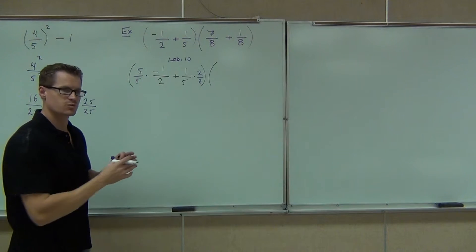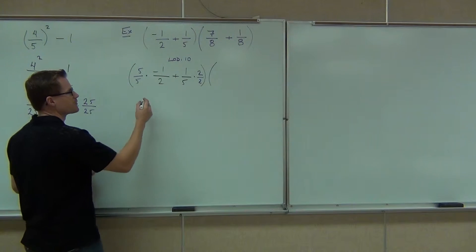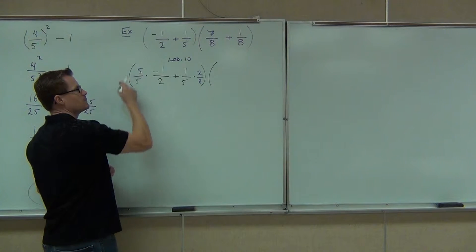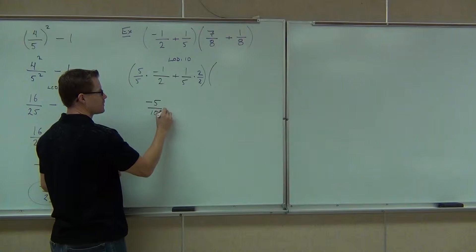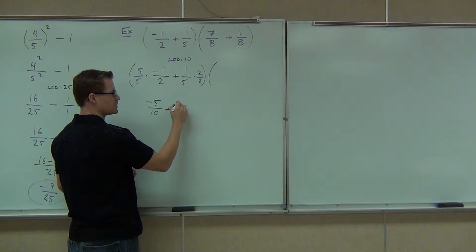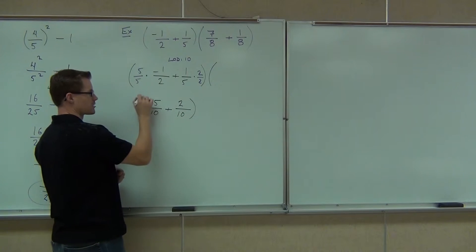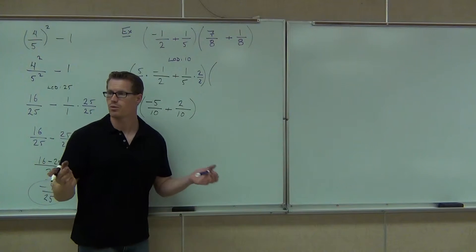They're going to be equivalent, but we're purposely unsimplifying them for now. What's this fraction going to become? Negative 5 tenths. Plus how much? 2 tenths. Hey, right there, we've got a common denominator. That worked for us. That's exactly what we wanted to have happen.